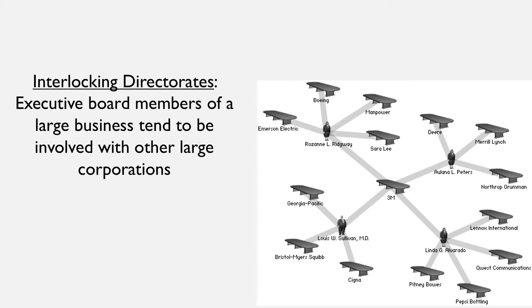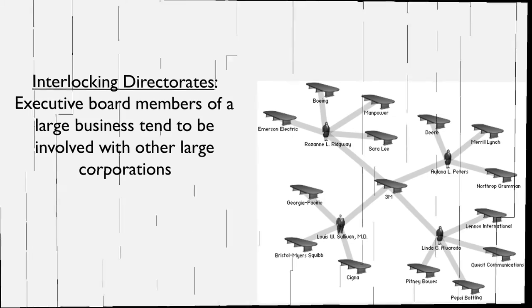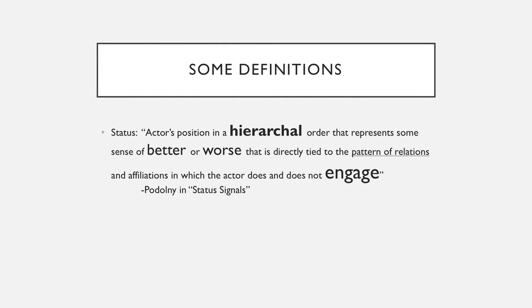First, based on William Roy's piece on Socializing Capital: The Rise of the Large Industrial Corporation in America, we see that large corporations and more powerful companies have an advantage in the American marketplace because they have access to more resources and are often doing business with each other through interlocking directorates. Furthermore, larger companies tend to have a higher status, which Joel Podolny explains in Status Signals, where he explores how the status of a company affects consumer behaviours in the market.